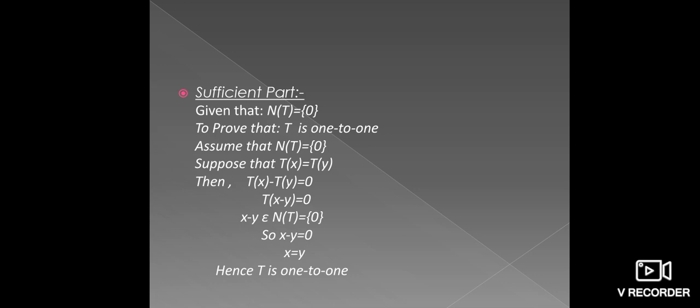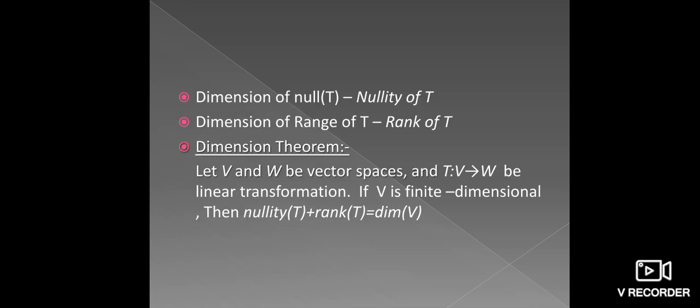The dimension of the null space of T is said to be the nullity of T, and the dimension of the range of T is said to be the rank of T. Now, see the statement of the dimension theorem. T is a linear transformation from vector space V into vector space W, where V is finite dimensional. Then nullity of T plus rank of T equals the dimension of V. This is also said to be the rank-nullity theorem.